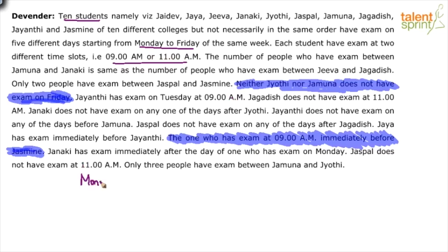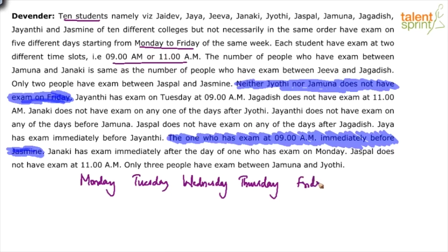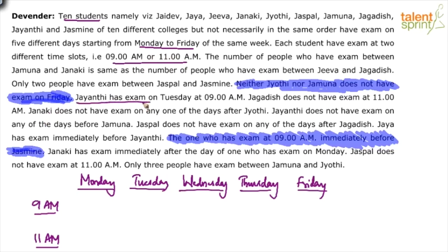So the grid looks like this: Monday, Tuesday, Wednesday, Thursday and Friday — these are the days — and then there are two slots, 9am and 11am. Anything given directly: Jayanti has exam on Tuesday at 9am, so Jayanti is placed at Tuesday 9am. That slot is done. Jagdish does not have exam at 11am, so if it's not 11am it has to be 9am — Jagdish is at 9am, though we don't know which day yet.